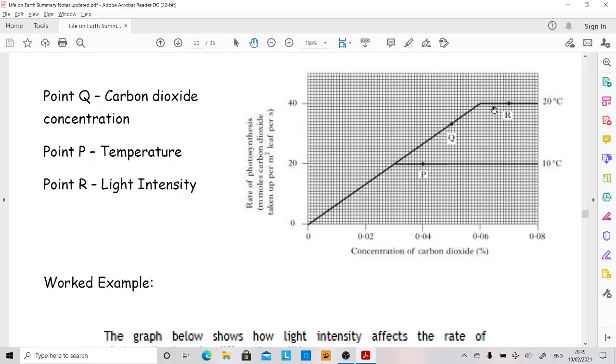Up here, we've got it's flattened off again. So it can't be carbon dioxide concentration because that was still being increased. And it can't be temperature because we've already looked at that and there's no other information about temperatures. So it must be light intensity that's made it flatten off there.